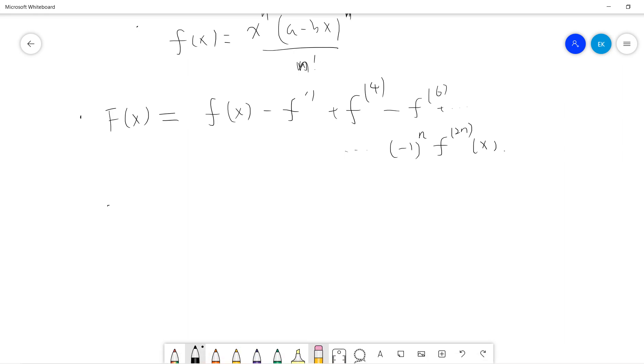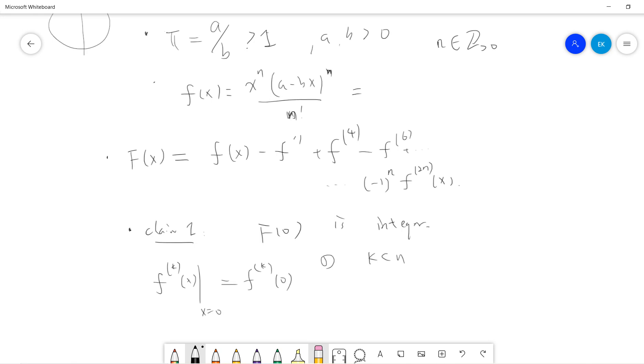The first statement I want to show, claim 1, is that F(0) is an integer. The reason is, let's see what is the f^(k)(x), and put x equals 0. So this is 0. Let's consider two regions. One is if k less than n. If you see, the first term in f(x) should be x^n over n factorial, plus something x^(n+1) over n factorial, plus something x^(n+2) over n factorial. So if k less than n, there will be remaining x, so the k-th derivative will be 0.